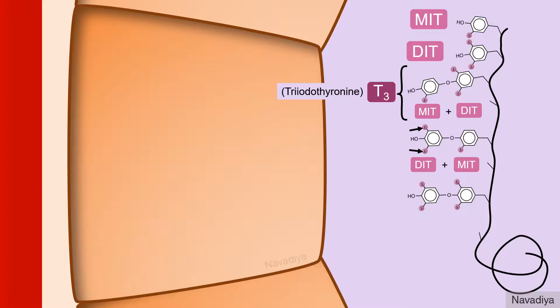And second is two iodines on outer ring and one iodine on the inner ring. This is called reverse triiodothyronine or rT3. It has no biological activity. So this T3 is important here.